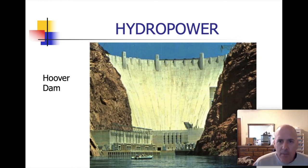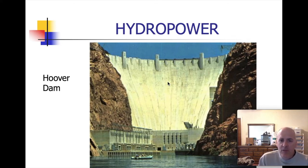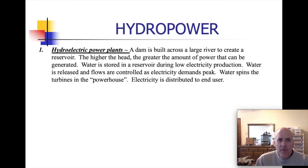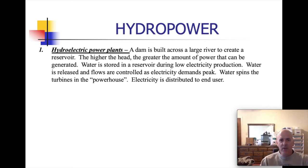We're going to finish up renewable energy today with hydropower, which is a pretty big one. We get a good percentage of renewable energy from hydropower, usually in the form of dams. This is Hoover Dam, the biggest one in North America. With hydroelectric power plants, a dam is built across a large river to create a reservoir. Water flows through and spins turbines in the powerhouse, distributing electricity to end users — just like steam and fossil fuel plants.